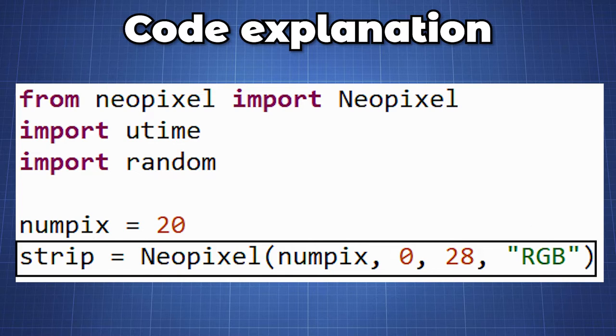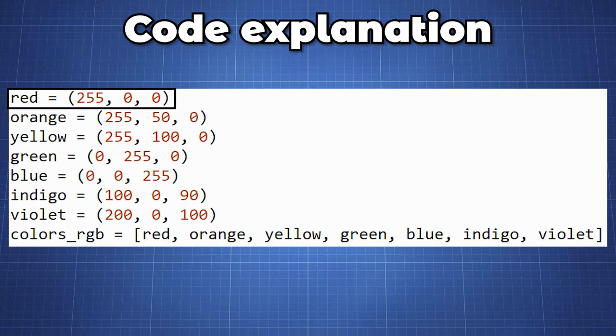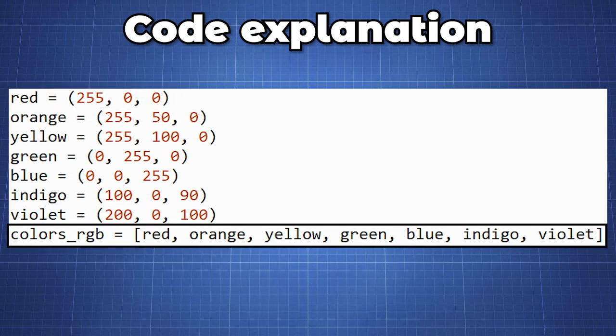Some LEDs have RGBW which have a separate LED for producing white light. In this block of code we create different colors. Remember that we are using the RGB color model so you can create any color. In the first line we create a variable red and set it equal to the tuple which will have the value of 255 for red and 0 for green and blue. At the end we create a list of all the colors.